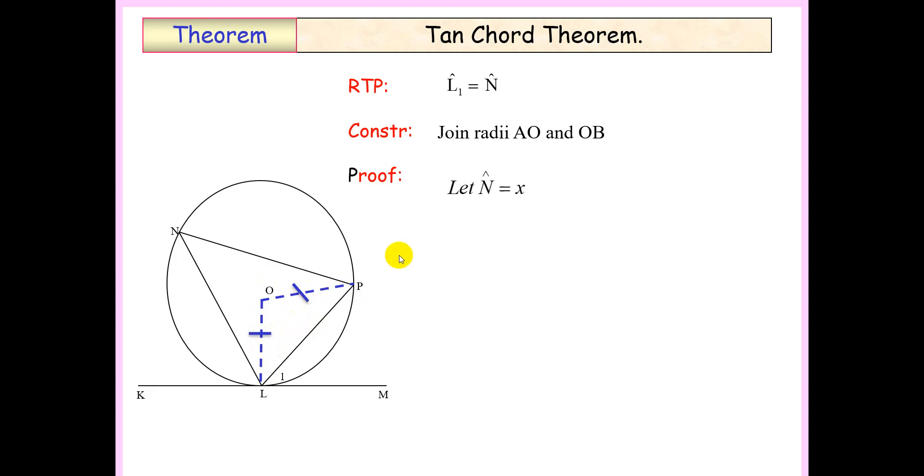So let's call angle N to be x. Now if angle N is x, we need to find an angle in relationship to N. So we have angle O which is the center, and we know that angle O would be 2x. The reason for that is angle at the center is twice the angle at the circumference.